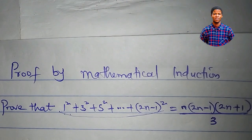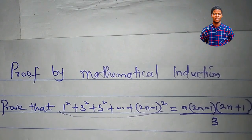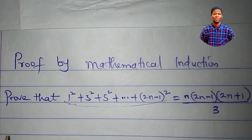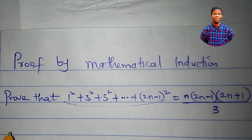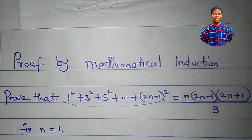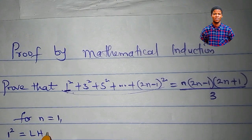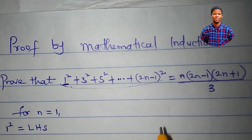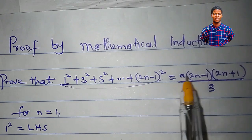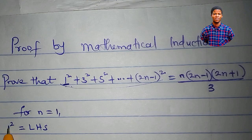I will walk you through three steps on how to prove by mathematical induction. The first step is to show that it is true for n equal to 1. For n equal to 1, what we have here is 1 squared. So we have 1 squared which is the left hand side. Let's plug in 1 at the right hand side and see if it will give us 1 squared.